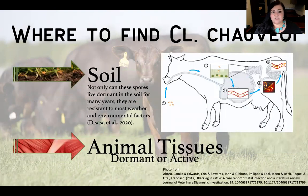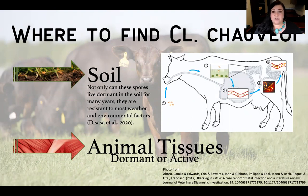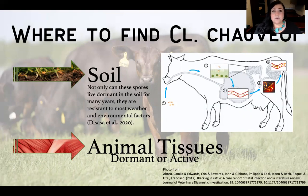So where do we find Clostridium chauvoei? For the most part we're going to find it in the soil. It's very resistant to any sort of weather, environmental factors, and even human factors. It's very hardy and it is really hard to get rid of once it is in your soil. We'll also find it in animal tissues, whether that be its active state — which is releasing that toxin and resulting in death to the animal — or it could be in the dormant state where it is just hanging out in that animal's tissue waiting for that anaerobic environment to present itself for it to multiply and germinate.